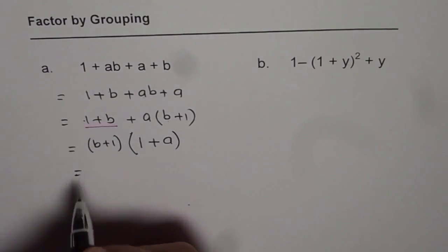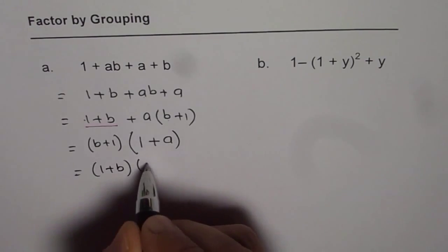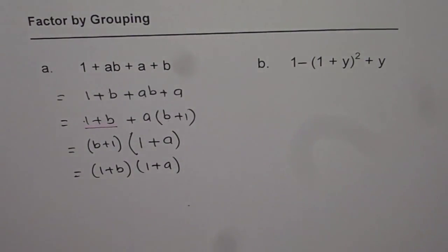So we can write our result as either you can write (1 + b)(1 + a) or (b + 1)(a + 1), either way. So anyway, either would be correct. So that is how we can factor this polynomial.